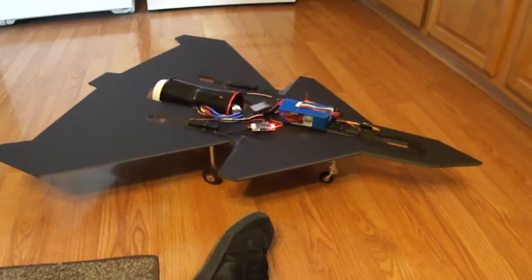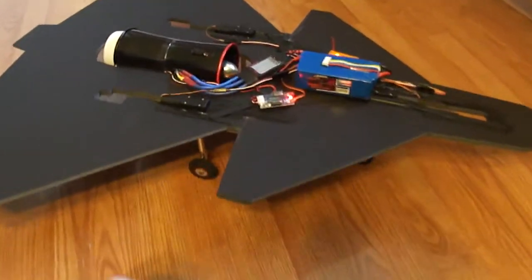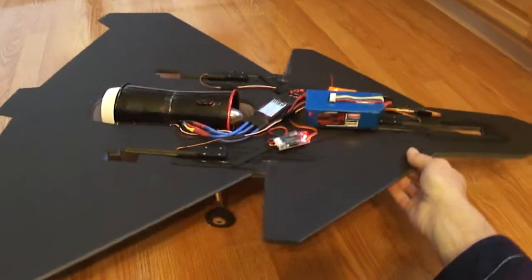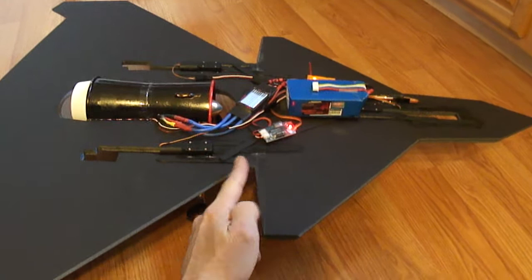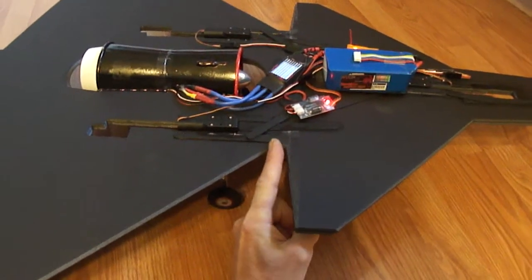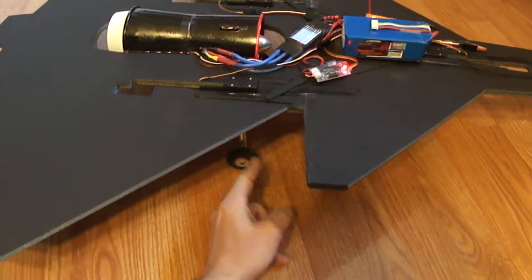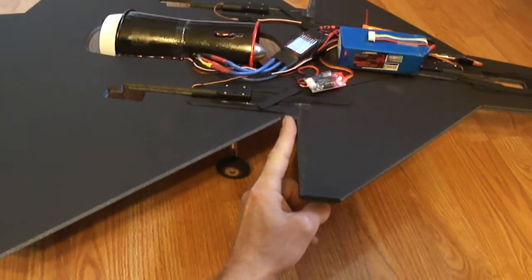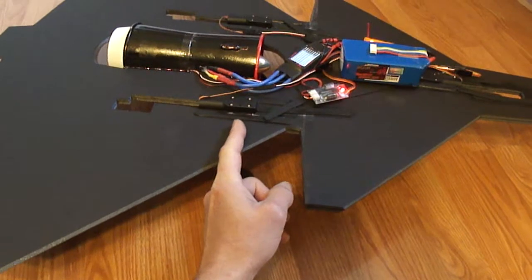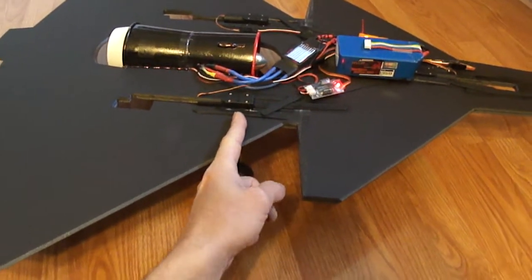I went ahead and did a couple of prototypes with this because I wanted to find out where the CG was. The CG is about right here. So anytime you guys are going to build a jet and you're going to install landing gear, retracts like I got, if your CG is here, I only go like about an inch and three quarters to two inches behind that CG line.